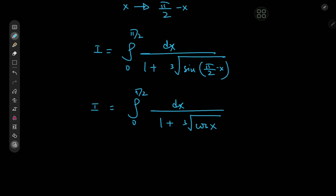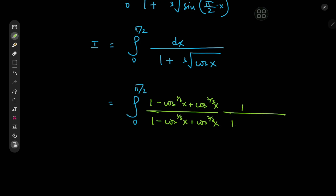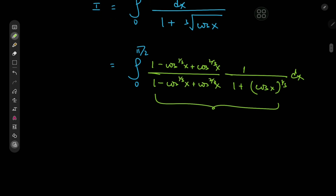What are we supposed to do now? If we had 1 plus cosine x that would have been quite easy, but that's not the case — we have 1 plus cube root of cosine x. So I'm about to expand by a very interesting version of 1: specifically (1 minus cosine^(1/3) x plus cosine^(2/3) x) divided by (1 minus cosine^(1/3) x plus cosine^(2/3) x). Notice that in the denominator we then have 1 cubed plus cosine^(1/3) x cubed, which of course equals 1 plus cosine x.